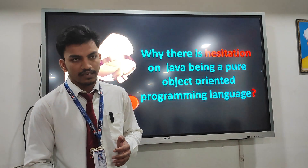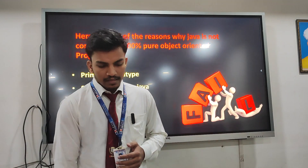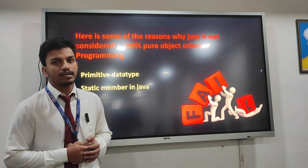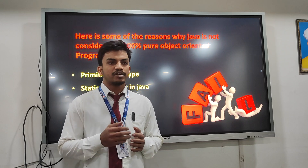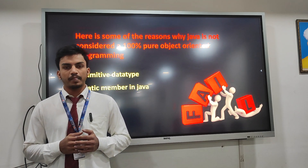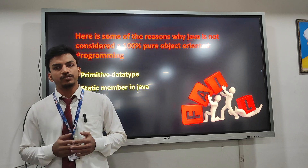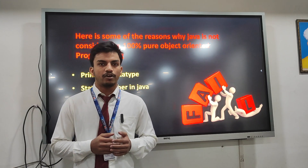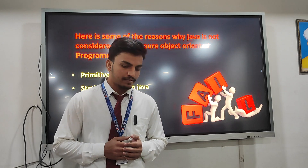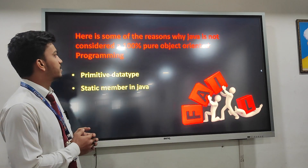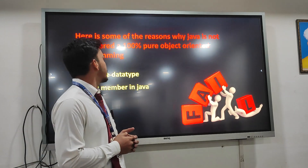Let's see why there is hesitation about Java being a pure object-oriented programming language. Here are some reasons why Java is not called a pure object-oriented programming language. The first is the use of primitive data types — Java supports primitive data types which cannot be used as objects for storing data. In object-oriented programming, all data should be stored in the form of objects. Another reason is the use of static members in a Java class. These two reasons especially create the hesitation that Java is not 100% pure object-oriented programming.